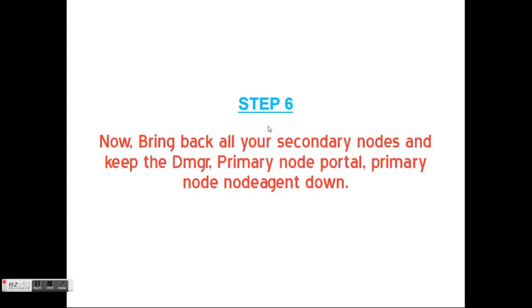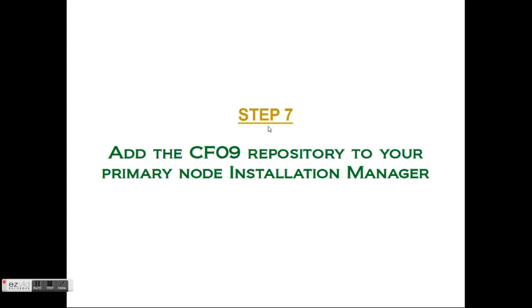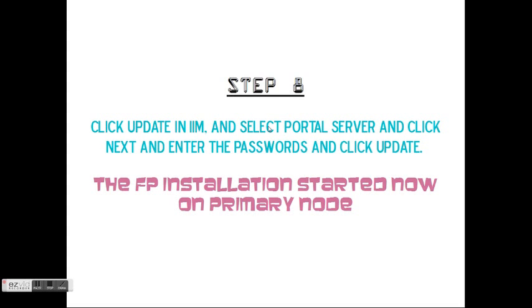Bring back all your secondary nodes. Make sure your Deployment Manager is up and your primary node is up, while the primary node agent and all primary nodes are down. Add the CF repository to your primary node's Installation Manager. Click update on Installation Manager and select portal as the product. Click next, next, next and click update. This starts the installation of the fix pack on your primary node.